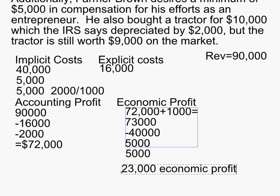Is twenty-three thousand dollars in economic profit a good thing or a bad thing? It's a good thing because we've accounted for all the costs Farmer Brown had for getting into this business, and this twenty-three thousand means he did better than he could have done by pursuing his next best alternative.